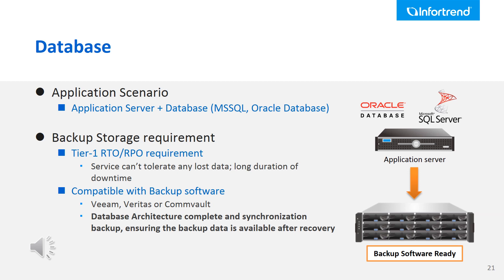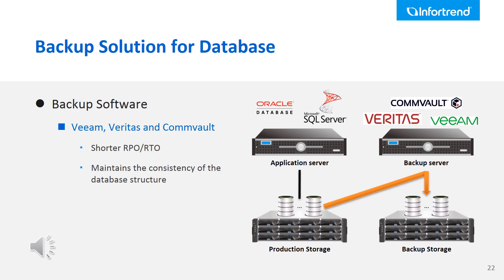We'll start from the database application. In this database topology, it includes several services with DBMS and database management software to build their database structure. Companies that use database systems, such as financial institutions or those renting data services to end customers, typically require a Tier 1 RTO and RPO backup solution. The best solution is using backup software to back up data from production storage to backup storage. The backup server with installed backup software connects to both, carrying out the backup procedure to achieve a shorter RTO and RPO, while also maintaining consistency of the database structure between production and backup storage.